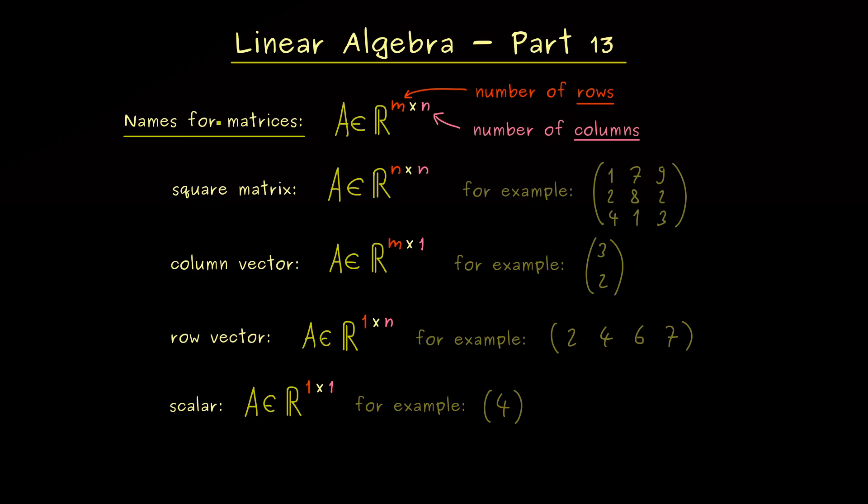So in summary what you should see here is when we deal with matrices a lot of other objects are also included already. By knowing this we can go to more special matrices.